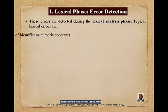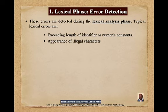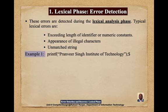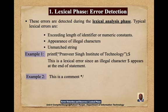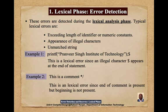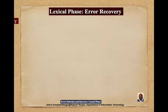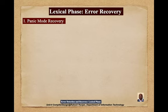Errors detected during the lexical phase include: exceeding the length of an identifier or numeric constant, appearance of an illegal character, and unmatched strings. For example, writing a printf statement in C with a dollar sign at the end is a lexical error since the illegal character dollar appears. Another example is writing asterisk-slash as a comment end without a beginning.